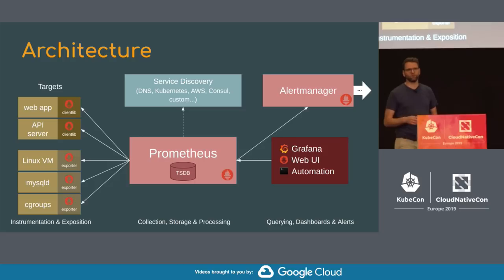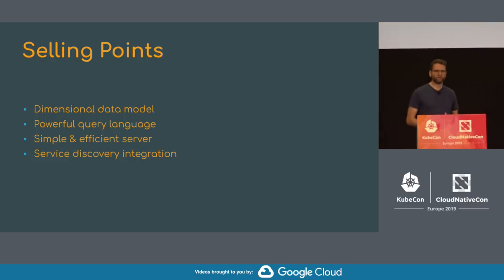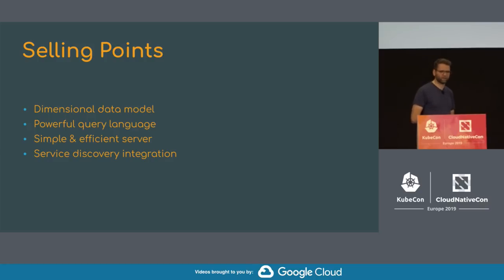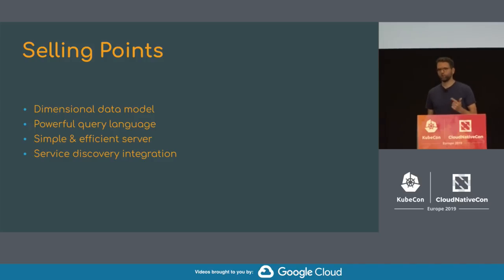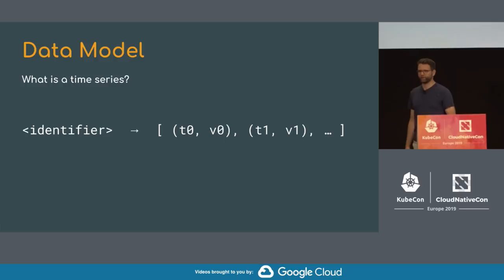There are four major reasons why Prometheus was successful, especially back in 2015: a dimensional data model, a query language that goes along with it for powerful operations, the simplicity and efficiency of a single Prometheus server, and integration with service discovery to make Prometheus work in dynamic environments. Let's go through these four points in detail, starting with the data model.